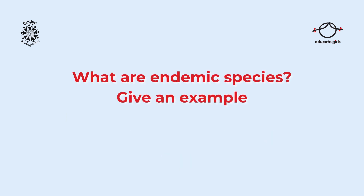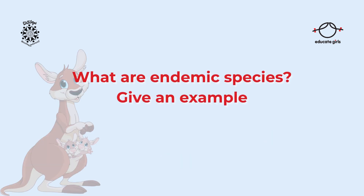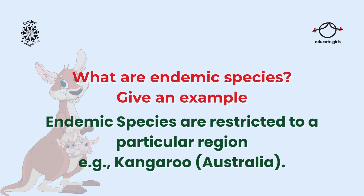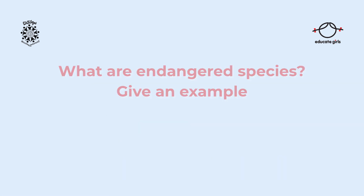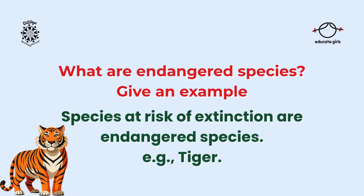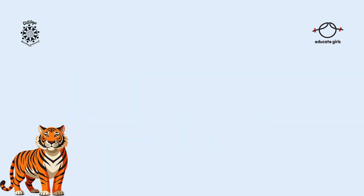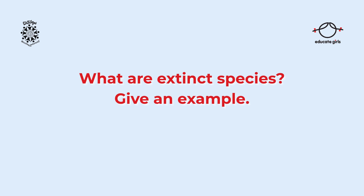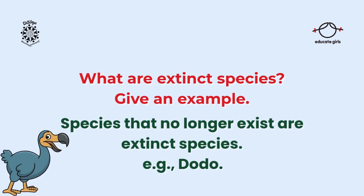What are endemic species? Give an example. Endemic species are restricted to a particular region. Example: kangaroo, Australia. What are endangered species? Give an example. Species at risk of extinction are endangered species. Example: tiger. What are extinct species? Give an example. Species that no longer exist are extinct species. Example: dodo.